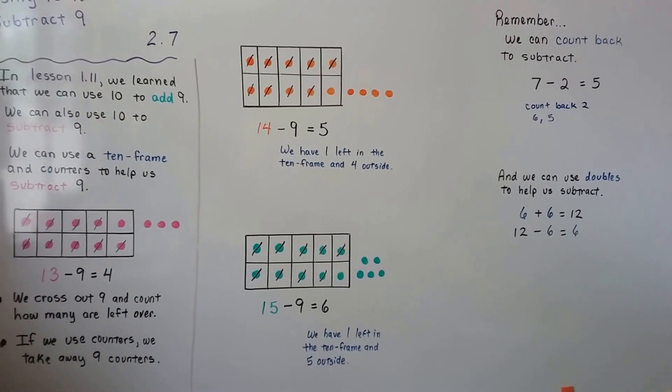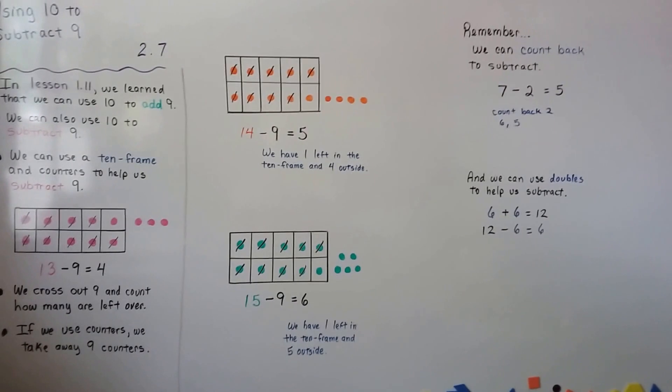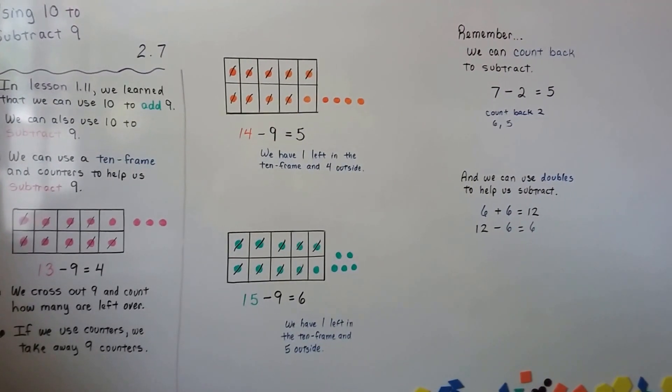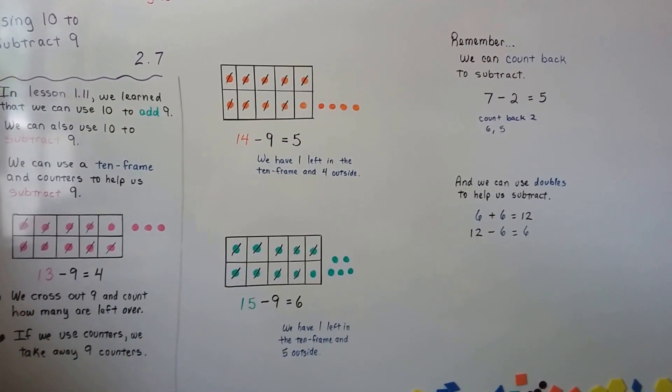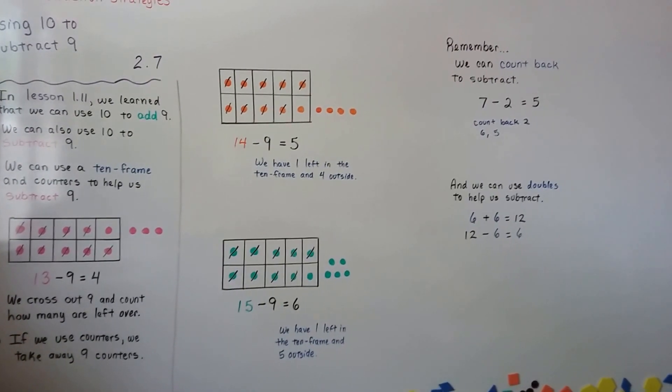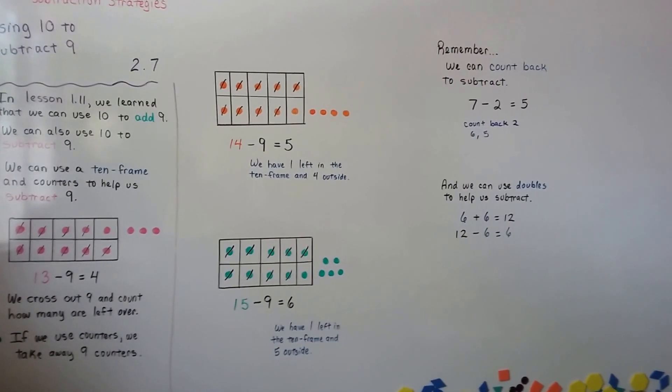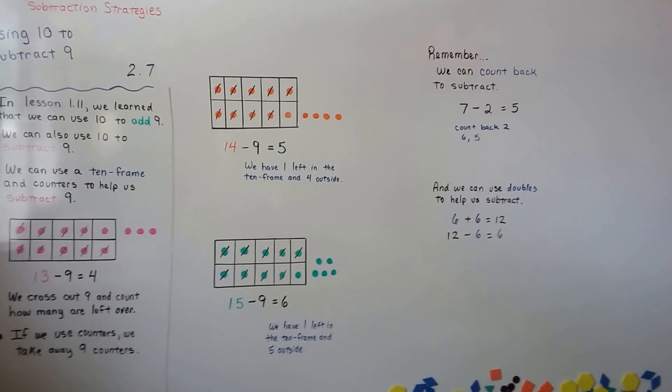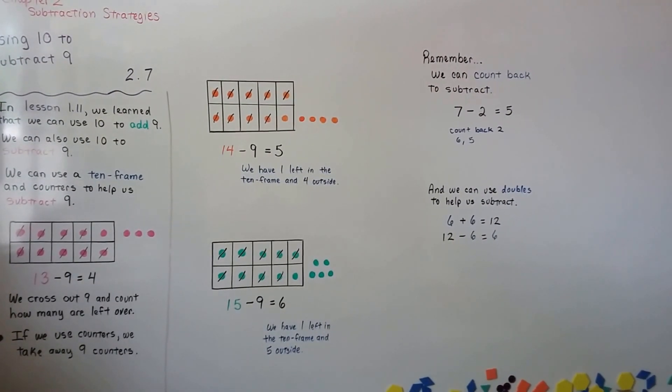You can use coins or little rocks or little gems or anything you want, even little Legos or something so that you can use them as counters and you can do a 10 frame. And try subtracting using 10. I'll see you next video. Bye!